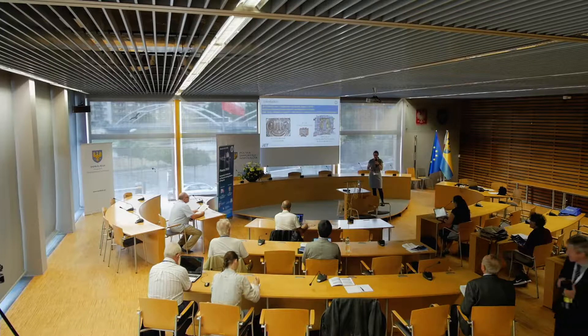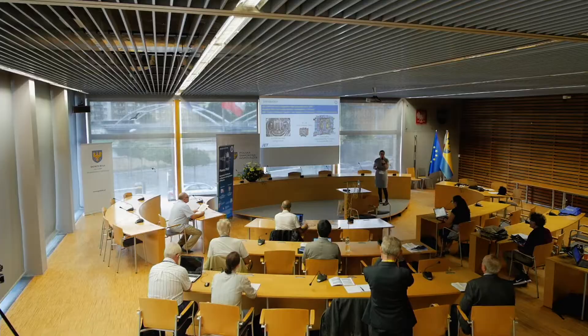JET started operating with its ITER-like wall in 2010. JET has a beryllium main chamber wall and a tungsten divertor. The aim of operating with this wall is to understand material migration, fuel retention, and recycling in ITER-relevant conditions, because ITER will also operate with a beryllium wall and a tungsten divertor. The main chamber is made from Inconel, so we also have sources of iron in the machine.